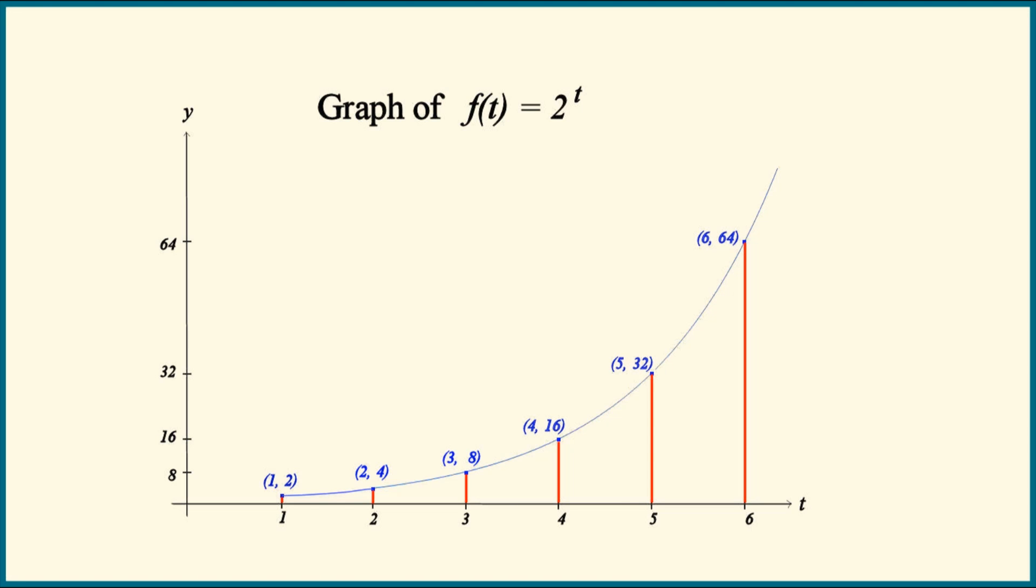Moving from left to right over each unit interval, the slopes of the secant lines are in order: 4 minus 2, that's 2; 8 minus 4, that's 4; 16 minus 8, that's 8; 32 minus 16, that's 16; and 64 minus 32, that's 32.